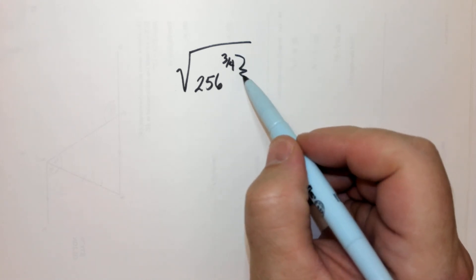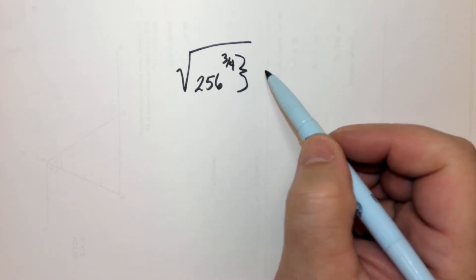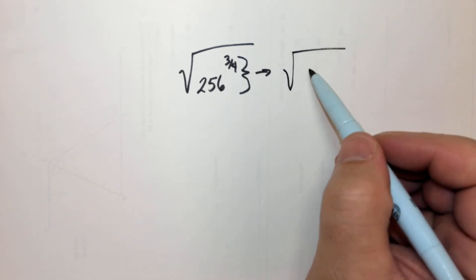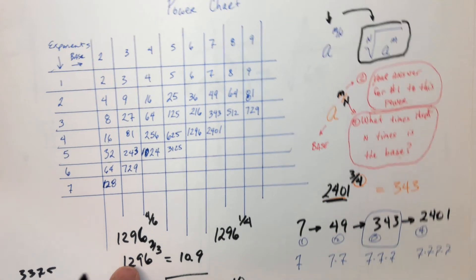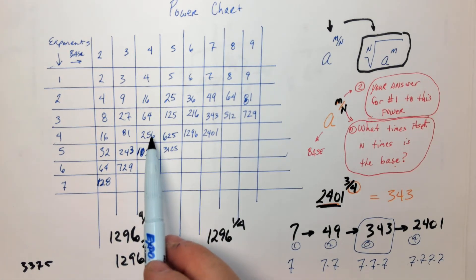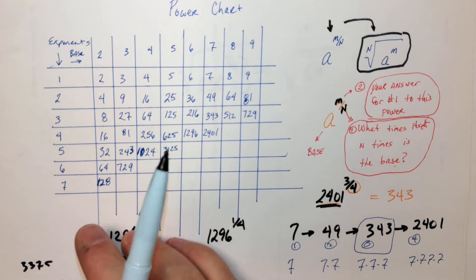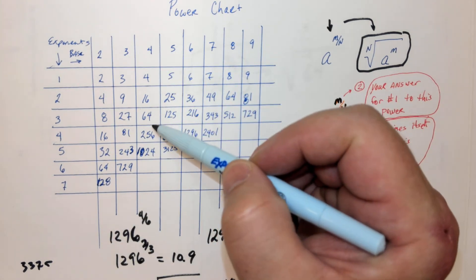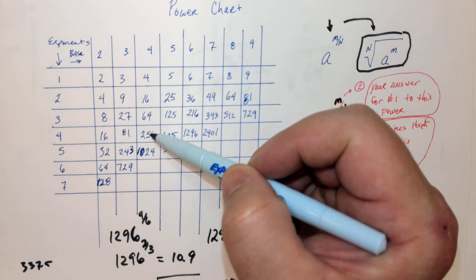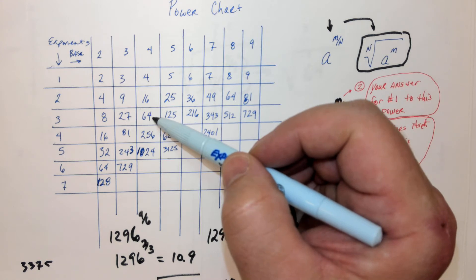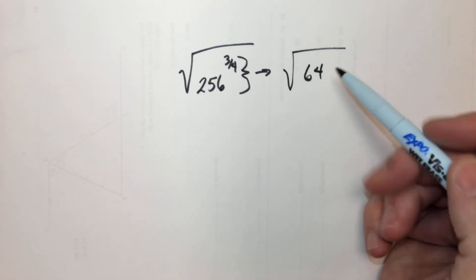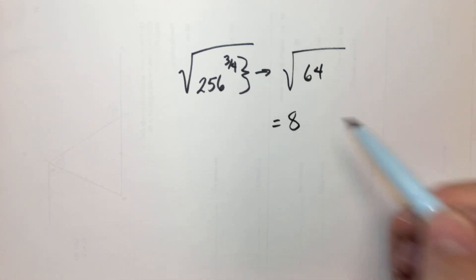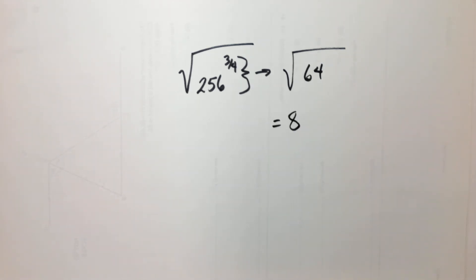What about this part — just this part right here? 64. Do you guys agree that's 64? Yes. So, 256 to the 3/4 — it was the 3rd spot. So, yes, 64. And the square root of 64? Eight.